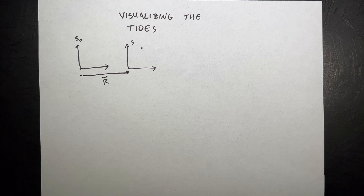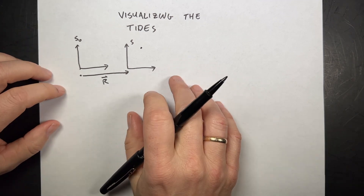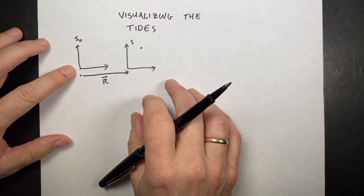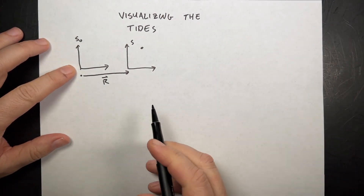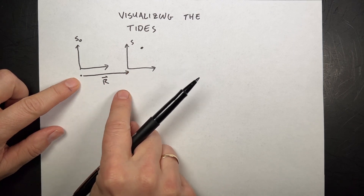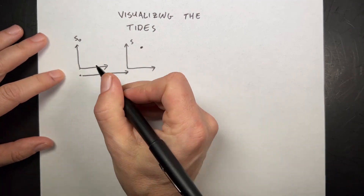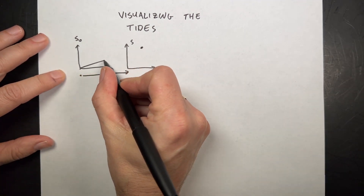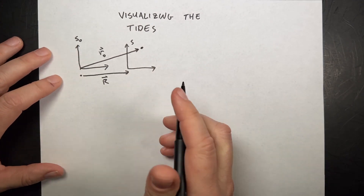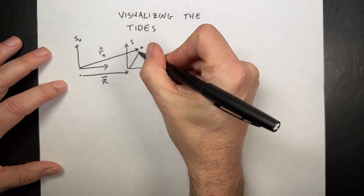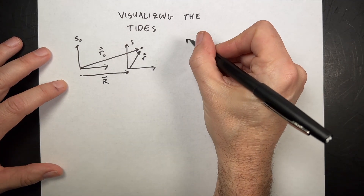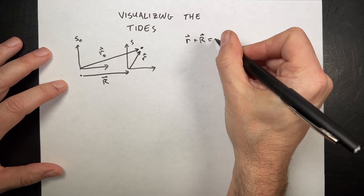The first thing we need to think about is what happens when you have a non-inertial reference frame. Imagine I have reference frame S0, and then some object in another reference frame S, separated by a vector R. R is not constant — it's actually accelerating. I can draw a vector R0, the location in the stationary frame, and R, the location in the accelerating frame, so that R plus R equals R0.